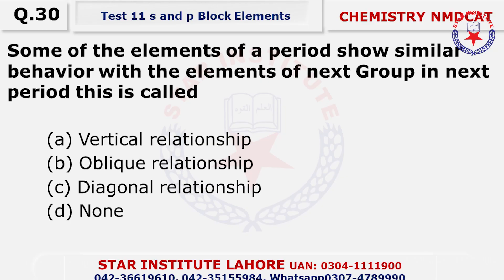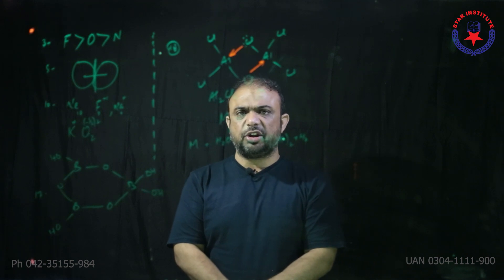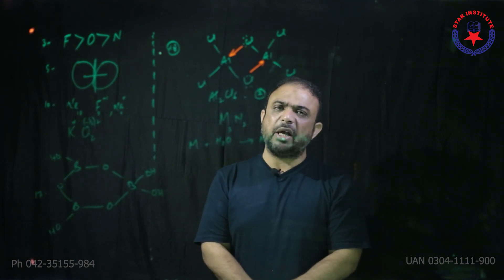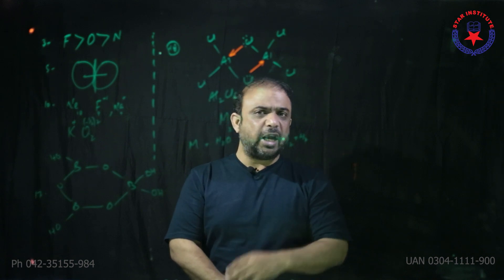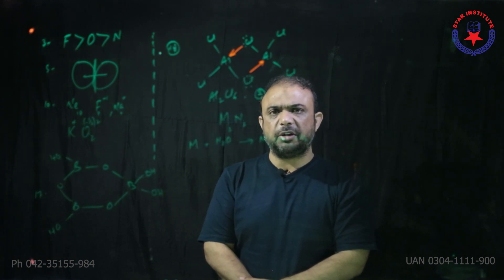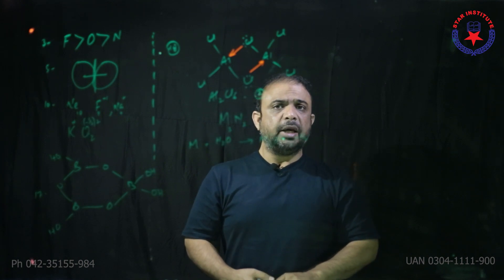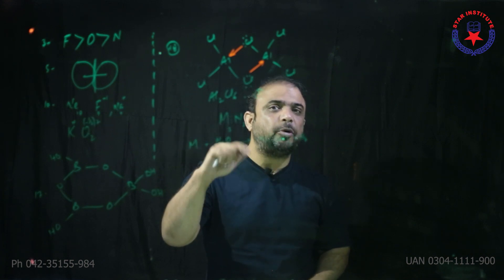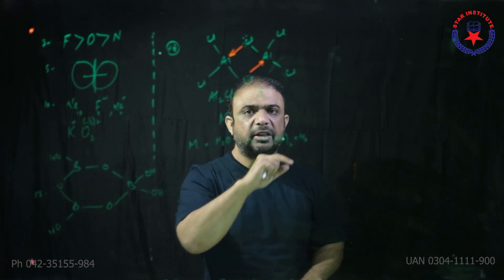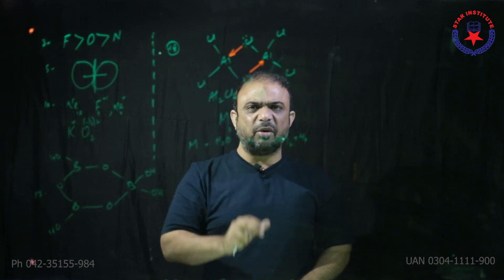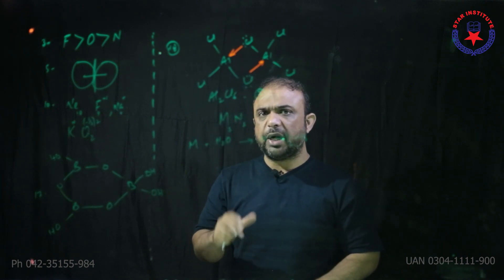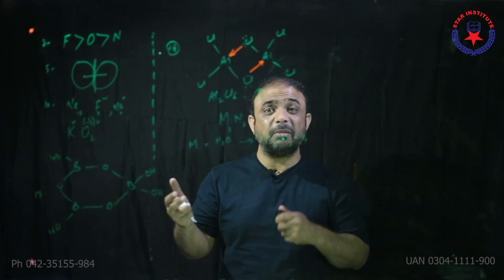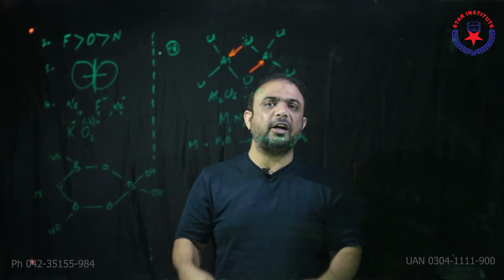Question number 30: Some elements of a period show similar behavior with elements of the next period in the next group — this is called the diagonal relationship. The diagonal relationship exists between period 2 and period 3 elements. The reason is that the size decrease going left to right is offset by the size increase going top to bottom, making their atomic sizes similar.